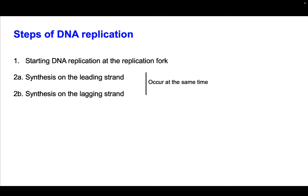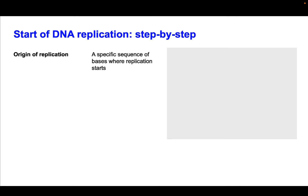We're going to walk through the steps of DNA replication, introducing all of the important enzymes. We're going to start at the replication fork, then go into how synthesis occurs on the leading strand and how it occurs on the lagging strand — they actually occur at the same time, but we'll separate them. The first key element of DNA replication is the origin of replication — a specific sequence of bases where replication starts.